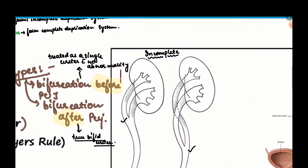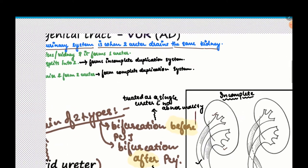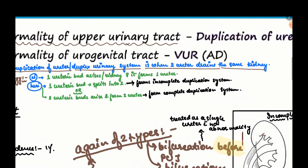Looking at the picture, we have one ureter here and one ureter here. Usually there is 1 ureter for 1 kidney; when 2 ureters drain the same kidney it is known as the duplication of the ureter or the duplex urinary system. Normally, 1 ureteric bud arises, goes to the kidney and results in the formation of 1 ureter.